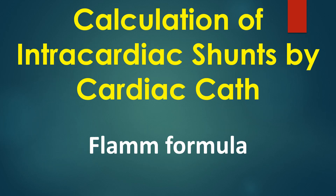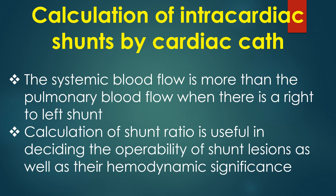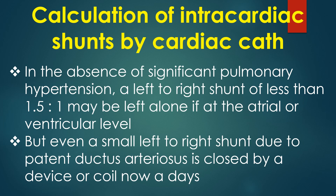Discussion on calculation of intracardiac shunts by cardiac catheterization and the FLAM formula. Pulmonary blood flow is designated as QP and systemic blood flow as QS. When there is a left-to-right shunt, pulmonary blood flow is more than systemic blood flow. The systemic blood flow is more than pulmonary blood flow when there is a right-to-left shunt. Calculation of shunt ratio is useful in deciding the operability of shunt lesions as well as their hemodynamic significance. In the absence of significant pulmonary hypertension, a left-to-right shunt of less than 1.5:1 may be left alone if at the atrial or ventricular level.